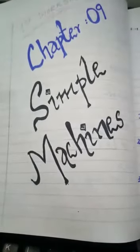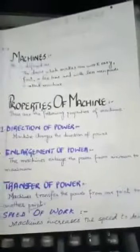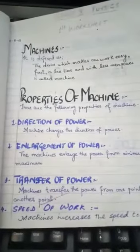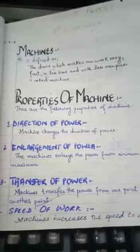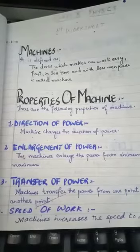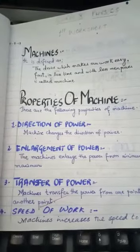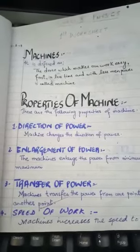Now first of all, talk about what is a simple machine. A machine is a device which is used to do our work more conveniently. In other terms, it can be defined as the device which makes our work easy, fast, in less time, with less manpower is called a machine.